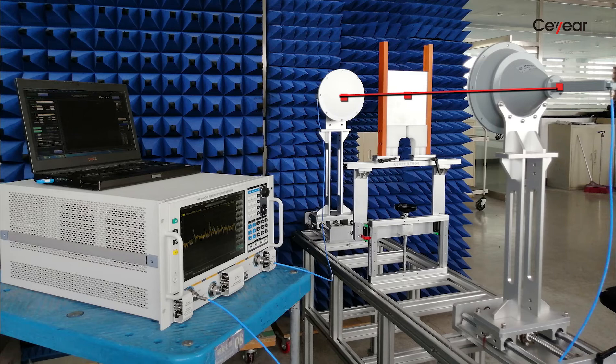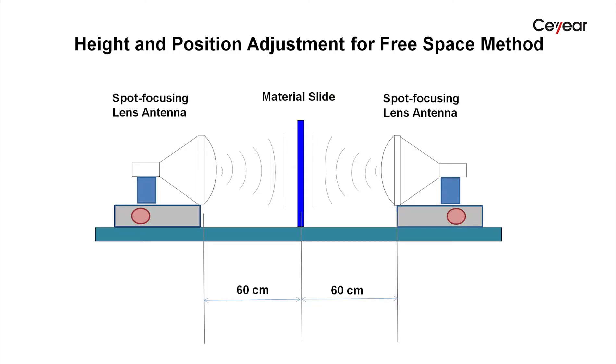For this antenna, the distance to the material is set to 60 cm. This is the lens antenna's focusing distance.